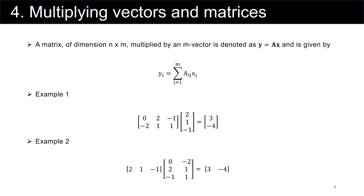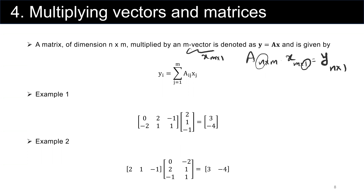Now we'll see how to multiply a vector and a matrix and what the result looks like. We define matrix A, which is n by m, multiplied by an m-vector, so vector x is m by 1. Each element of the result: A is n by m, x is m by 1, so the result y is n by 1. For i from 1 to n, element i of vector y is determined by the corresponding row-vector dot product.